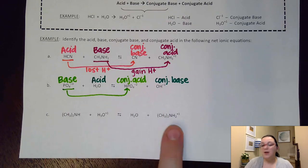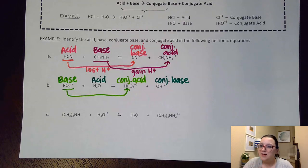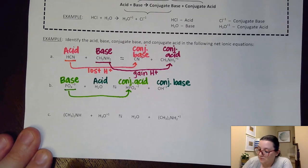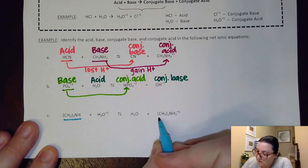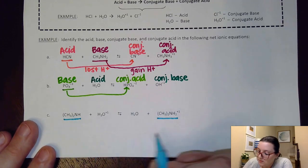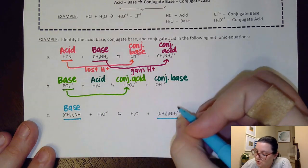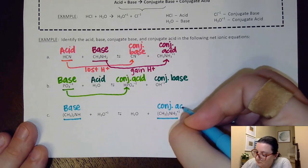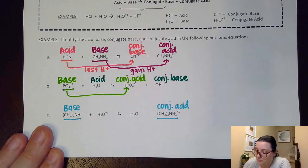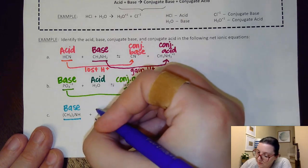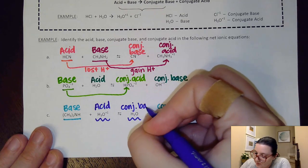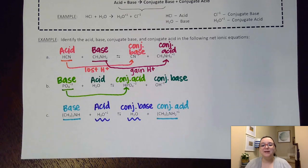I want you to take a moment and see if you can identify the acid, base, conjugate base, and conjugate acid in that last example. Go ahead and pause the video and try it out. Looking at the answer: starting with (CH3)2NH, here's its partner on the other side — I can see it's gaining an H⁺ from side to side, so this would have been my base, and (CH3)2NH2⁺ would have been my conjugate acid. For the other conjugate pair, we have an acid that loses an H⁺ to form the conjugate base, so water here is behaving as the conjugate base in this particular example.